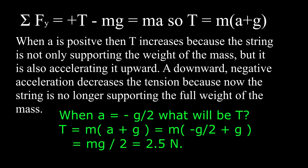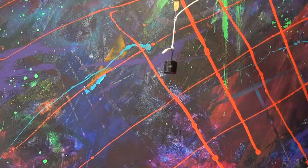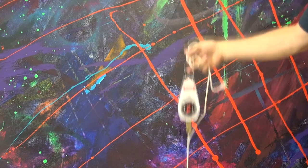When the acceleration is downward negative g over 2, what will be the tension? We have T equals m times (a plus g), but a is minus g over 2, so we get m times g over 2, which is 2.5 newtons. The tension is reduced when the mass is allowed to accelerate downward. If the hand lets go of the string, the tension becomes zero and the acceleration becomes minus g. The reduced tension allows the mass to accelerate downward.